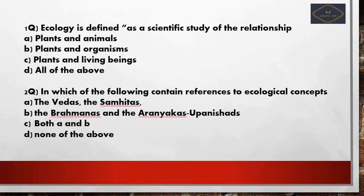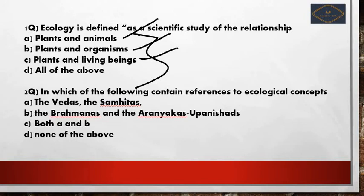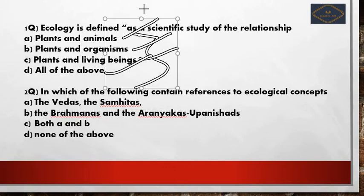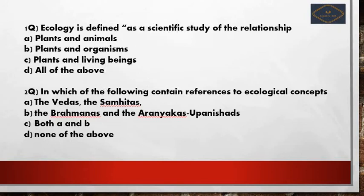First question: Ecology is defined as a scientific study of the relationship between — which of the following is correct? Option A: plants and animals. Option B: plants and organisms. Option C: plants and living beings. Option D: all of the above. The right answer is option D.